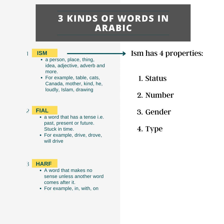Ism is a person, place, thing, idea, adjective, adverb, and more. Fi'al is a word that has a tense — past, present, or future — and Harf is a word that makes no sense unless another word comes after it.